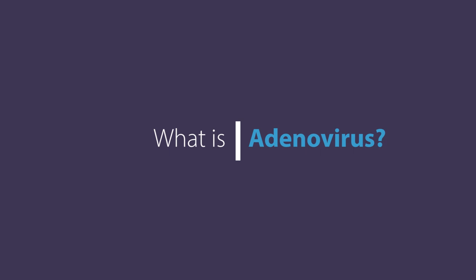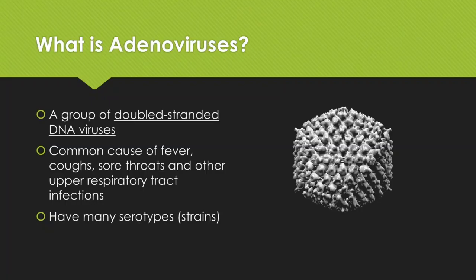So what is adenovirus? Adenovirus is actually a group of double-stranded DNA viruses, so they are very different from the coronavirus, which are RNA viruses. Adenoviruses can commonly cause fever, cough, sore throat, and other upper respiratory infections that we see on almost an everyday basis. There are actually many serotypes or strains of adenoviruses, and they are given different numbers representing the different strains.